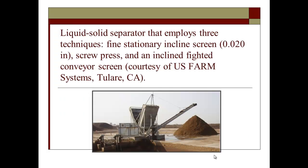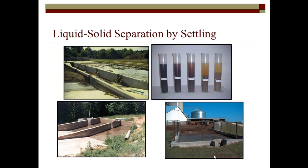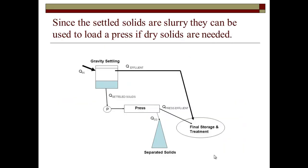Here's a combination of an in-flight screen and a screw press on swine manure. It's actually flighted — there are really three processes in one here: a fine screen with a spray, a screw press, and a flighted conveyor. Sedimentation, weeping walls — many different old and new ideas there. And then even combining sedimentation with something like a press to improve throughput and improve capacity of the system. So there are lots of options.